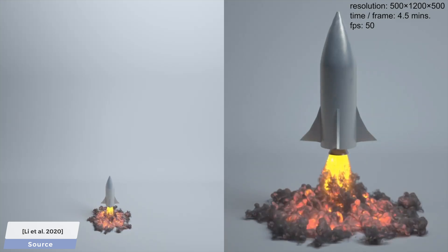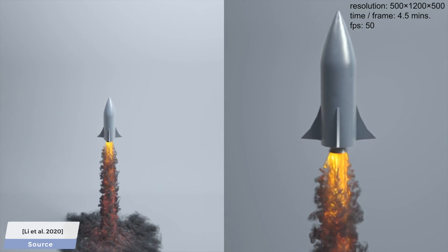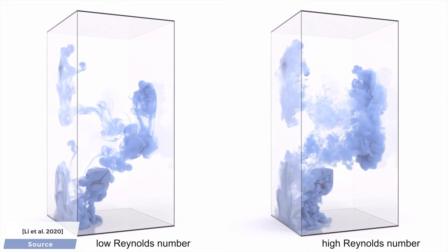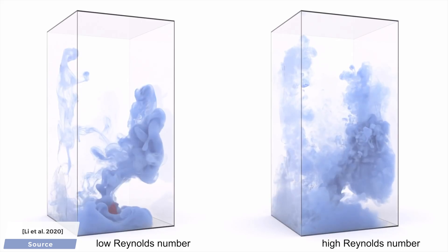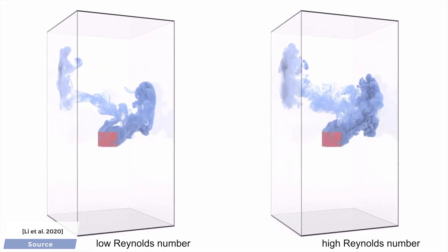For instance, in this simulation, two-way coupling is required to compute how this fiery smoke trail propels the rocket upward. So, coupling means interaction between different kinds of objects, but what about the two-way part? What does that mean, exactly?